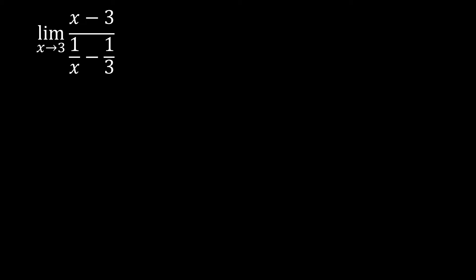So for this one, if we are going to do the C substitution, we will notice that it would lead to a 0 over 0. So let's try that out. Substituting x, this is now 3 minus 3 at the top, over 1 over 3 minus 1 over 3. So notice that we have a 0 at the top and this one is also a 0. So that's indeterminate.